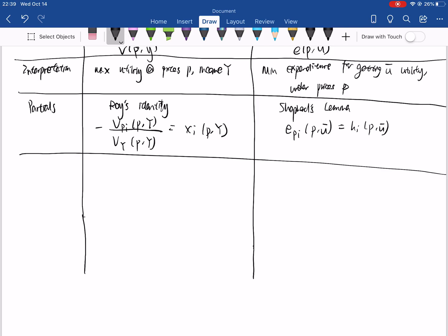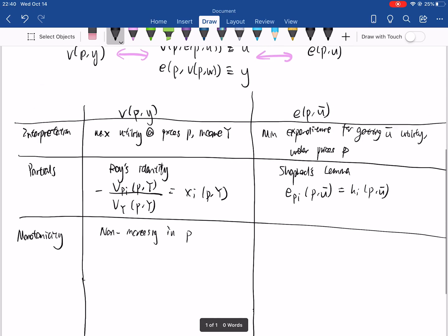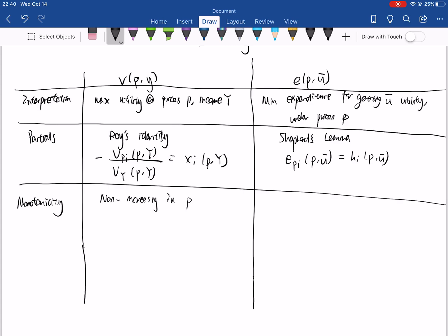Next we talk about the monotonicity of both functions. The indirect utility function is non-increasing in prices, and this is intuitive because the more expensive a good is, the less utility you're going to derive from it because the less you can buy. It's also non-decreasing in y because intuitively the more income you have, the more goods you can buy and the happier you are.